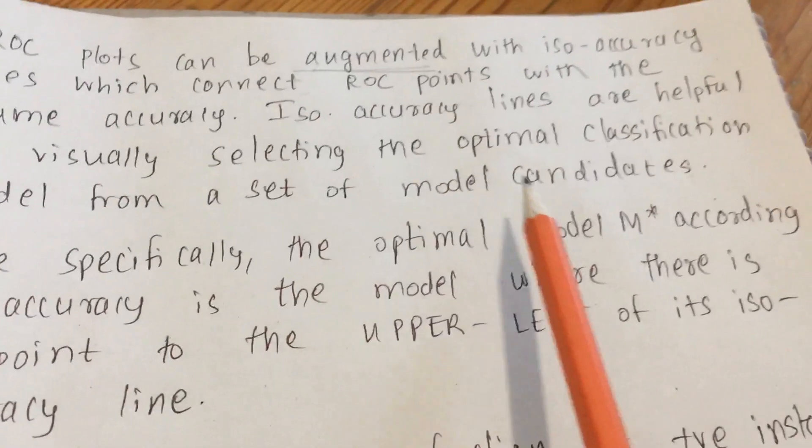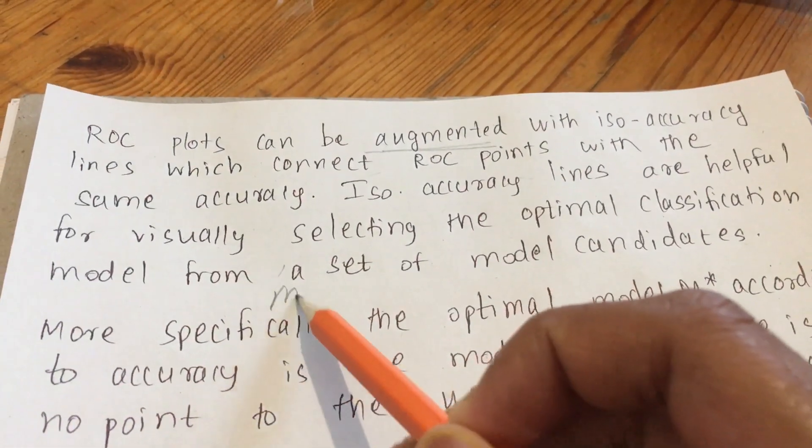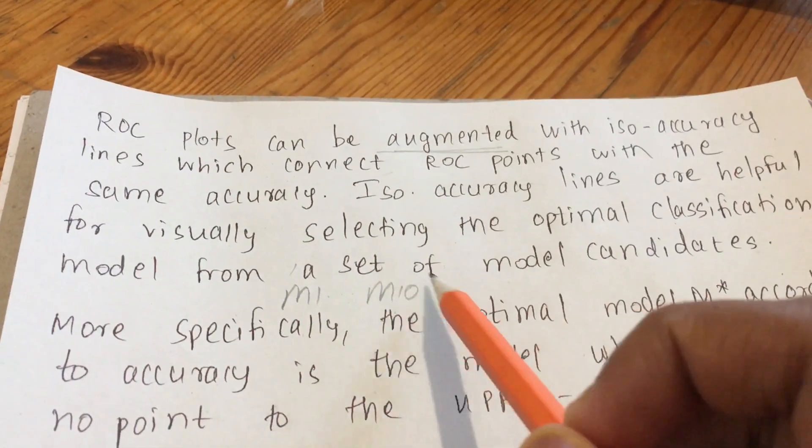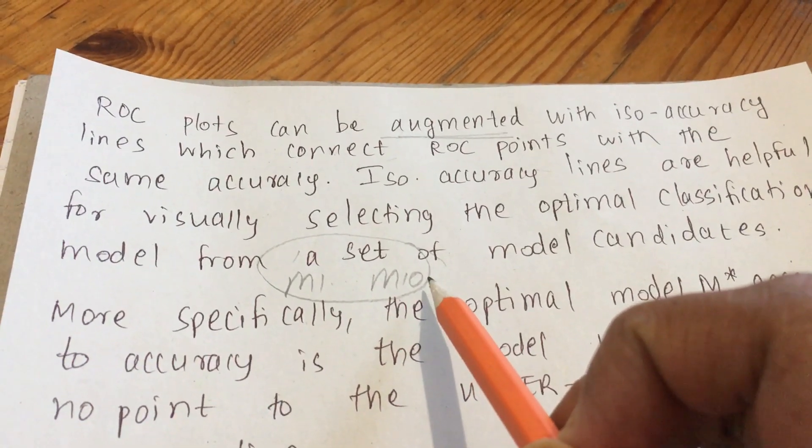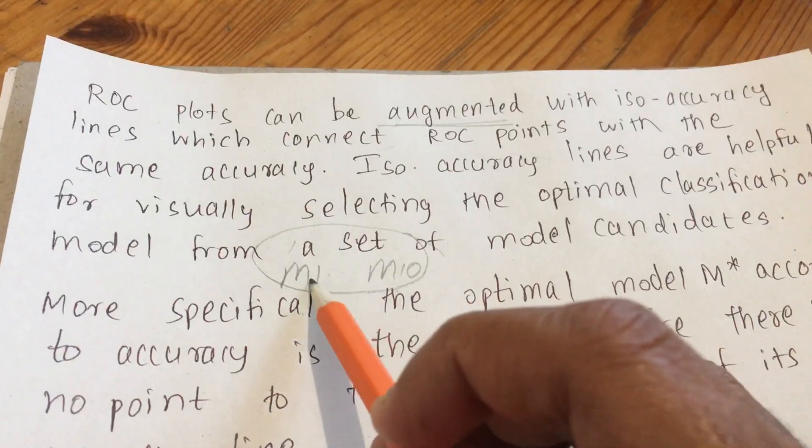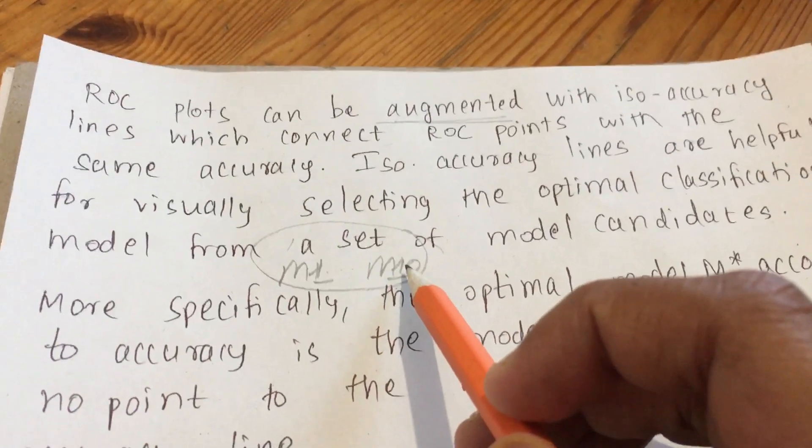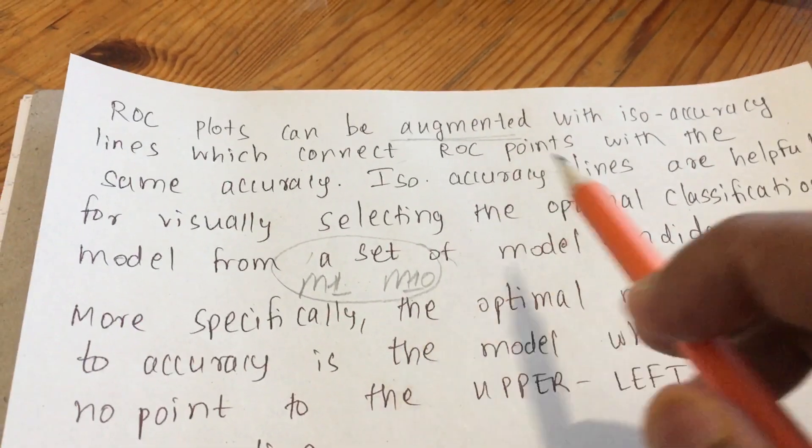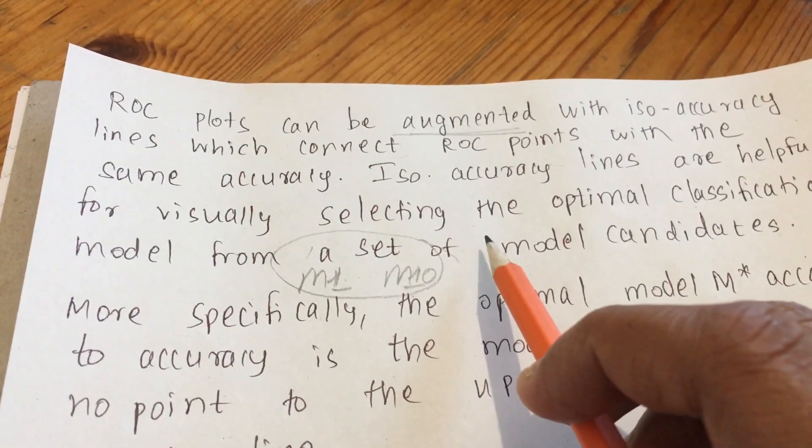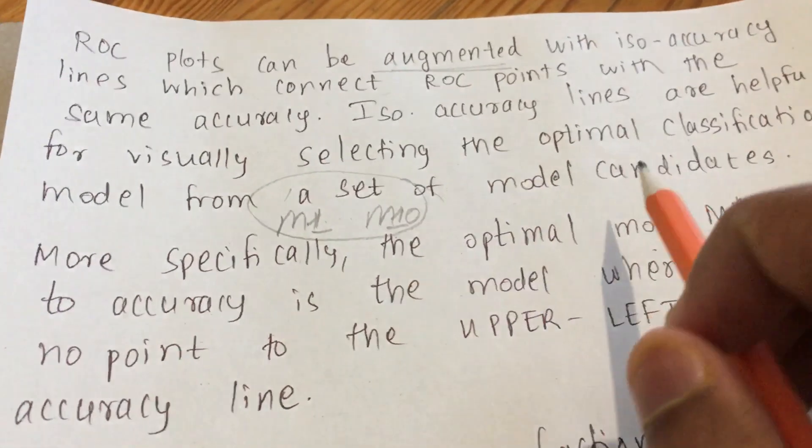Iso-accuracy lines are helpful for visually selecting the optimal classification model from a set of model candidates. Say you have M1 to M10 models, and you want to determine which model is the most suitable one for your business application or machine learning task. With ROC it takes time, like drawing the graph and calculating the area. Iso-accuracy just gives a better version and simplifies the task of selecting the model.